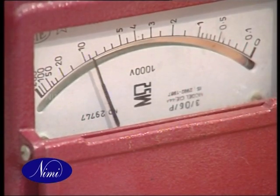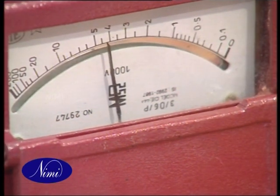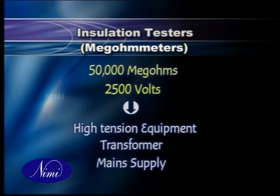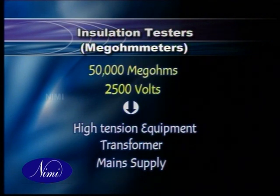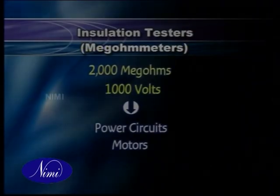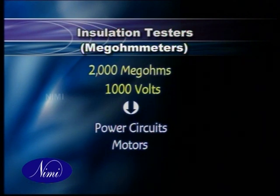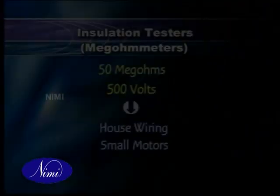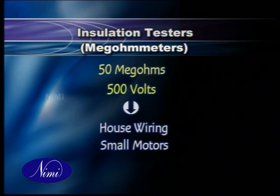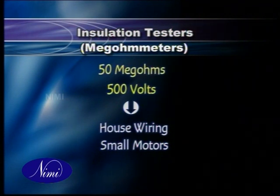However, it is recommended to rotate the handle at the slip speed to obtain a steady voltage. As megas are designed to measure very high values of resistance, they are used for insulation tests. A 50,000 megohms, 2,500 volts mega is to be used to test high tension equipment, transformers, main supply, etc. For testing power circuits and motors operating on voltages not exceeding 500 volts, a 2,000 megohms, 1,000 volts mega is to be used. For testing house wiring and small motors operating on voltages not exceeding 250 volts, megas of 50 megohms, 500 volts can be used.